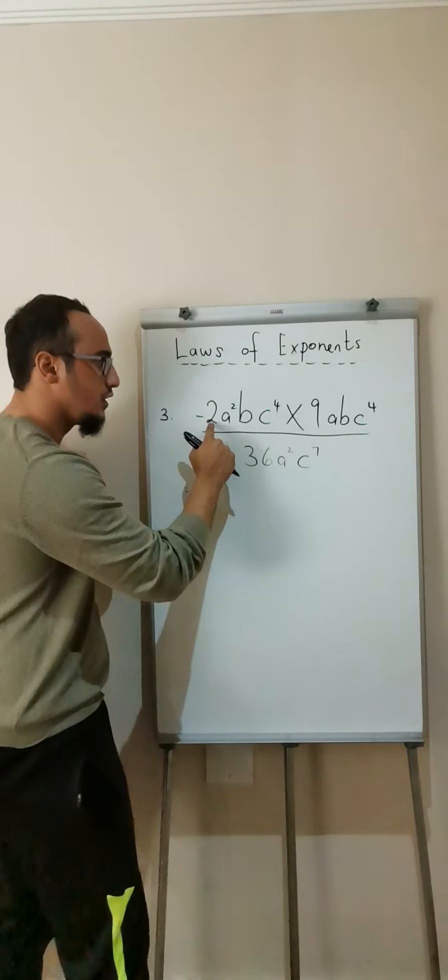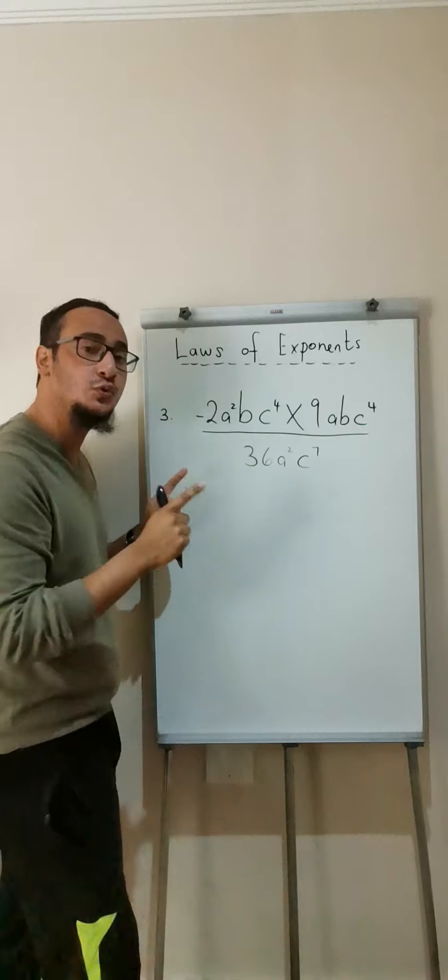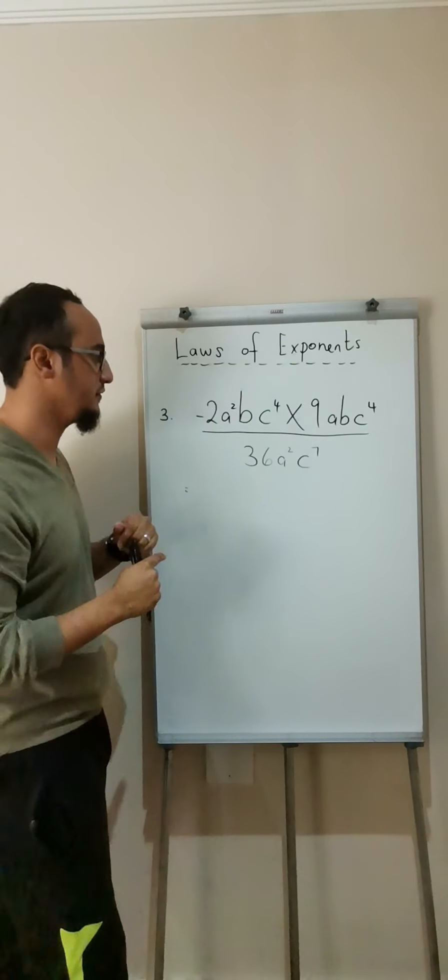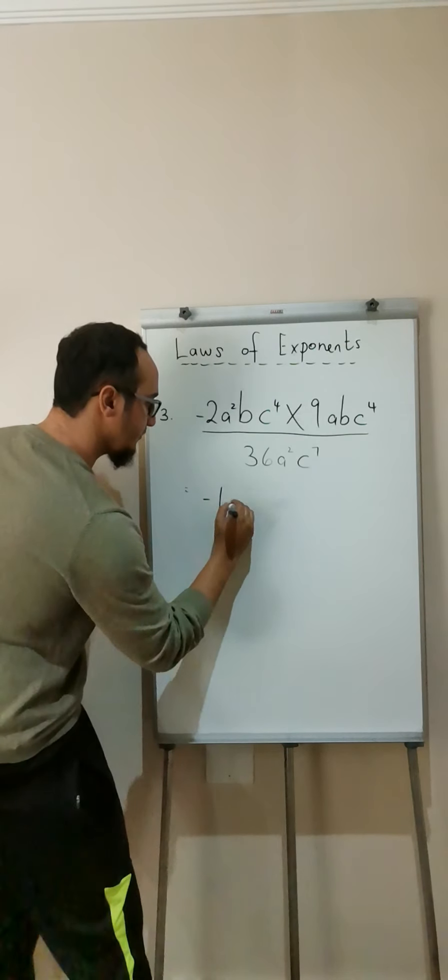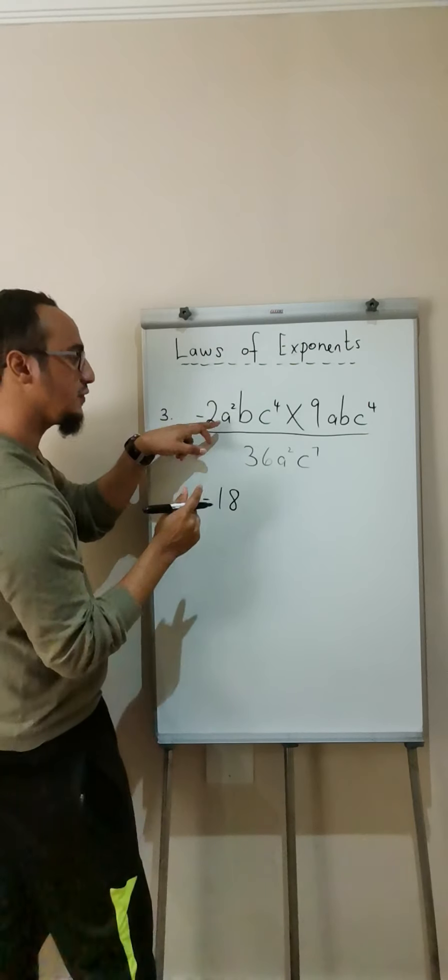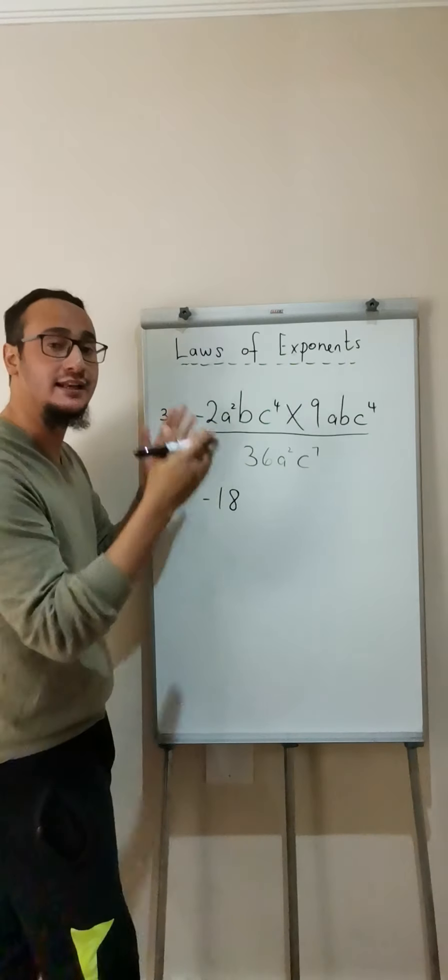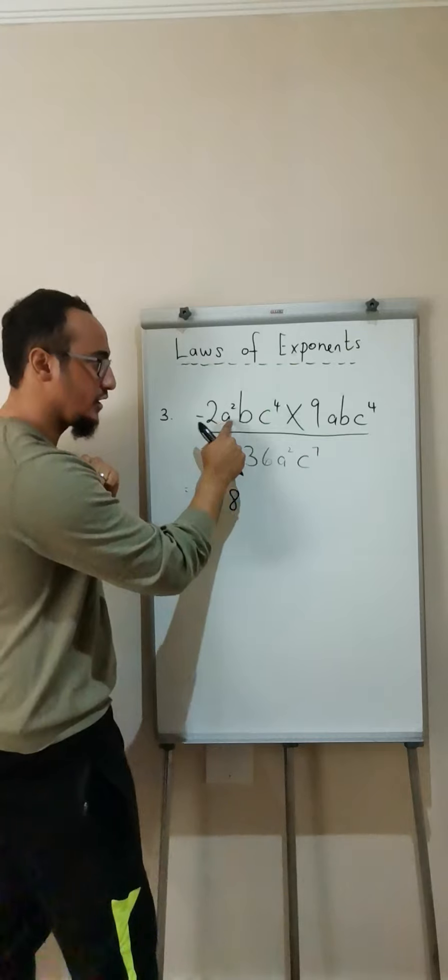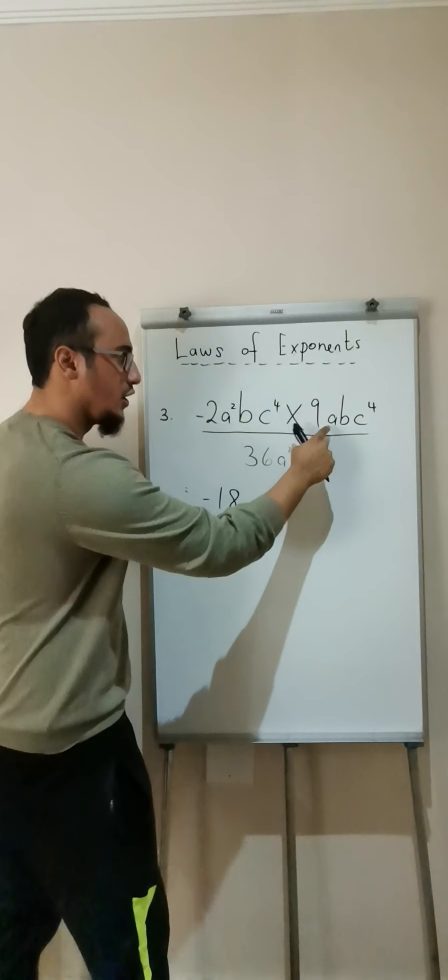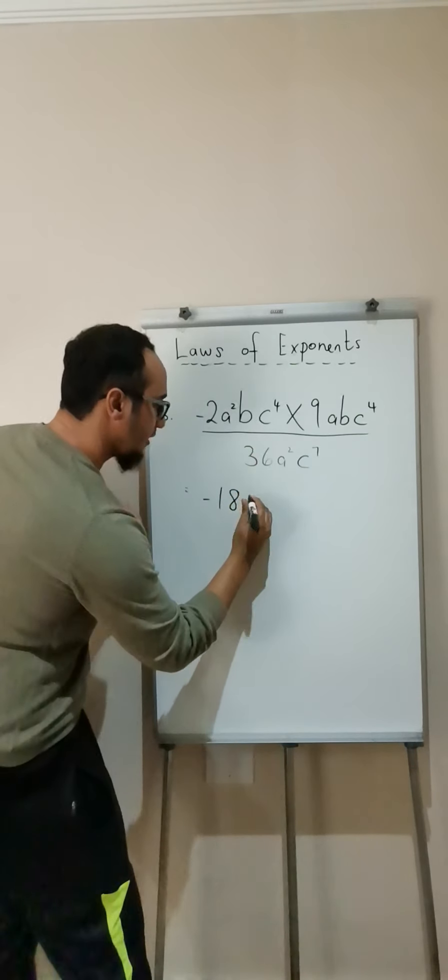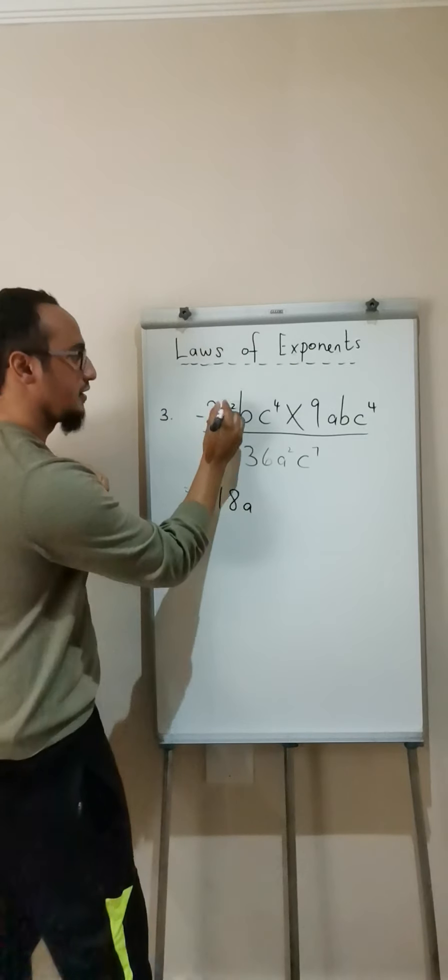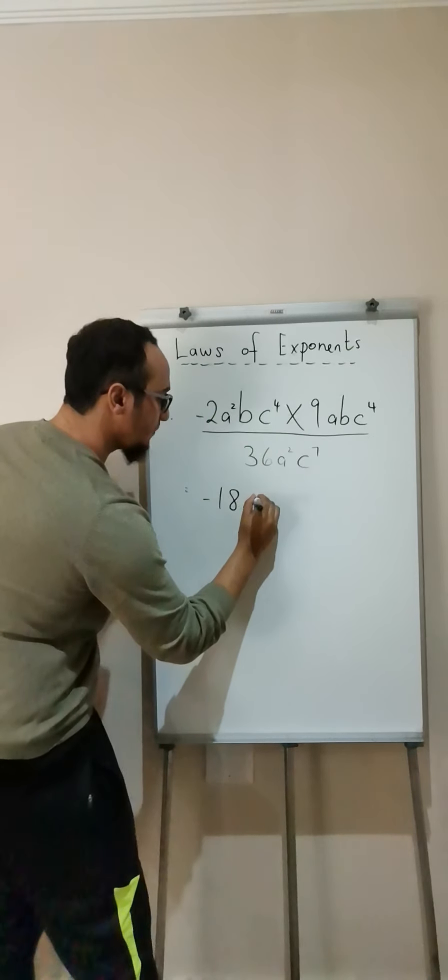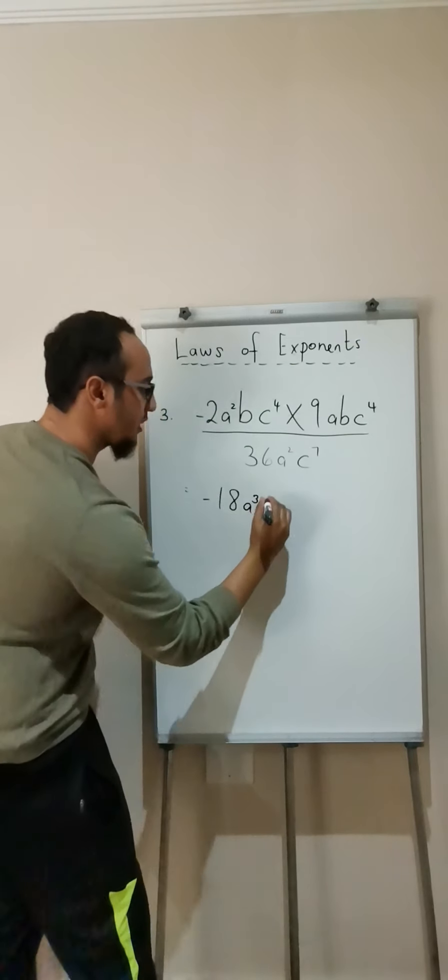So negative 2 multiplied by 9. I always multiply my coefficients first. And that is going to be equal to negative 18. Then I multiply the corresponding letters. So a squared multiplied by a. What happens when I'm multiplying and I have the same base? 2 plus 1 will be equal to 3.